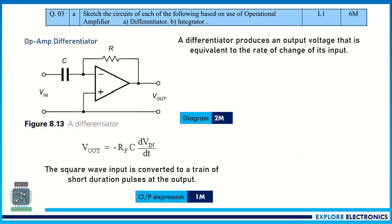They have asked to sketch the circuit of each of the following based on operational amplifier — that is, differentiator and integrator. The differentiator circuit is basically derived from the inverting amplifier. In the inverting amplifier, the capacitor is replaced by a resistor to act as an inverting amplifier. Using that inverting configuration as the base, the differentiator is designed.